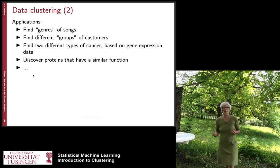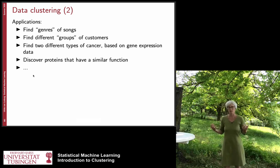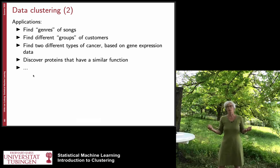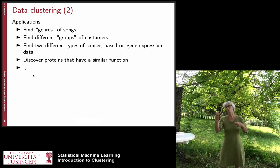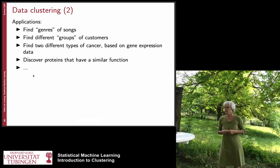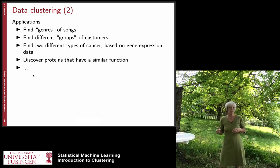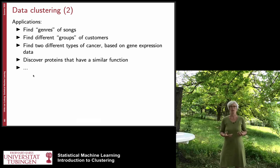There are a couple of applications. You might want to find the genre of songs — for example, if you have some kind of recommender system for songs, you might want to classify songs into different genres. Other examples include different groups of customers, different types of cancer based on gene expression data, or discovering proteins that have a similar function. There are many, many more applications.